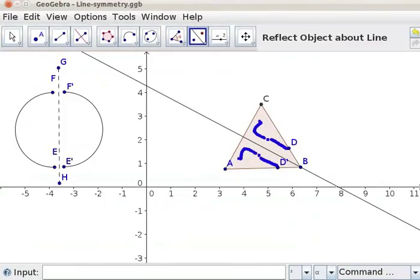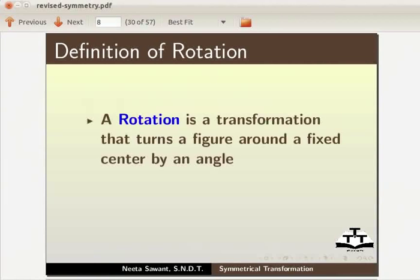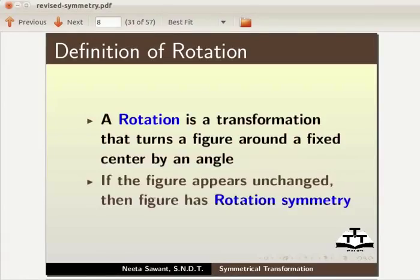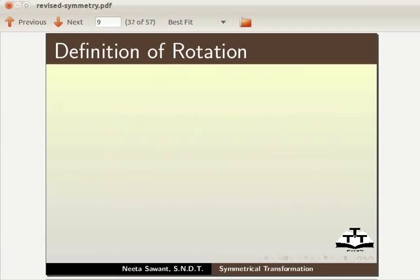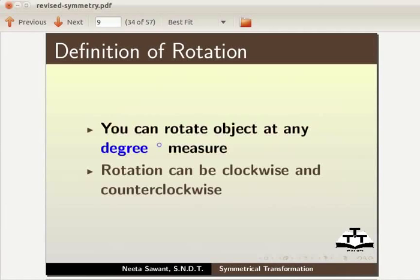Next, let us learn to rotate the object around a point by angle. Definition of Rotation: A rotation is a transformation that turns a figure around a fixed center by an angle. If the figure appears unchanged, then the figure has rotation symmetry. You can rotate object at any degree measures. Rotation can be clockwise and counterclockwise.